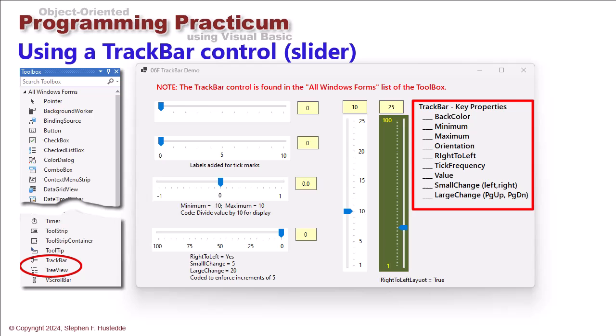The tick frequency is how often do you want to see those ticks. The default is one but maybe only once the ticks every five, which is the example I have down here. The value is the setting of the track bar where that little thumbtack is on the track.